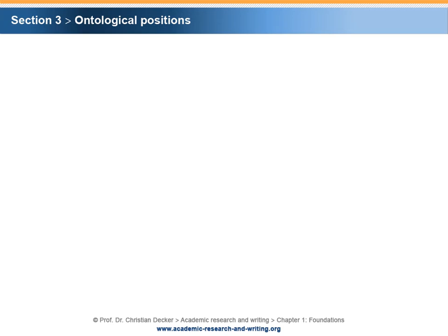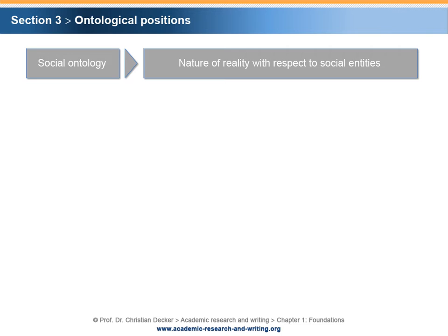Section 3 – Ontological Positions. Previously, ontology has been defined as the branch of philosophy that studies the nature of reality and deals implicitly with issues of truth. More precisely, social ontology studies the nature of reality with respect to social entities. Compared to natural sciences and formal sciences, social sciences are confronted with social phenomena which pose specific problems for the research process.